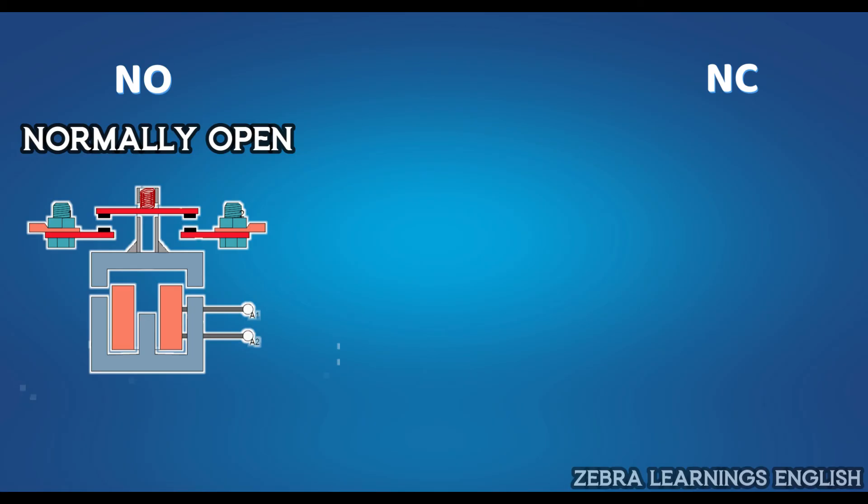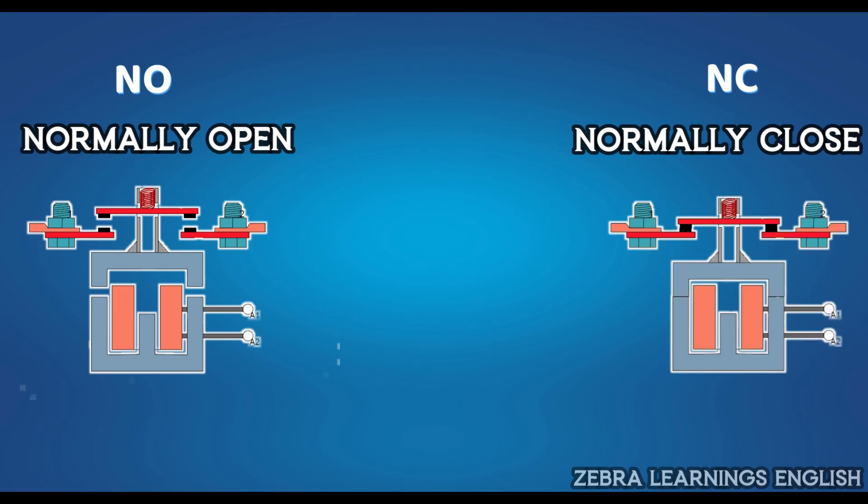NC contactor means normally closed contactor. That is, if no power supply is given to the coil, the contactor will be normally closed. Electricity will continue to flow through it. So it is a normally closed contactor.